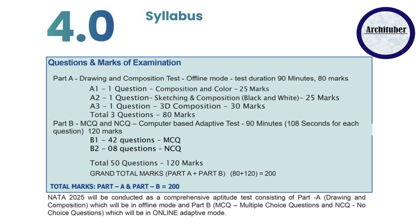Part B has MCQ and NCQ — multiple choice question and no choice question. This year Part B will be computer-based, for 90 minutes, with 120 marks in total. We have B1 type — 42 questions of MCQ, and B2 type — 8 questions of no choice question. In total you have 200 marks to score, and a best score ranges from about 140 to 160 or above.